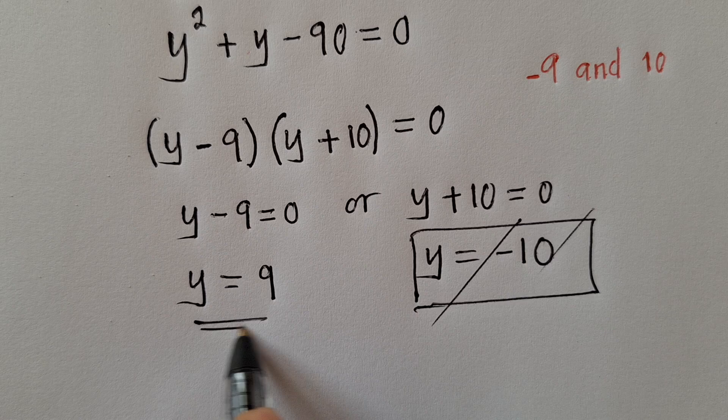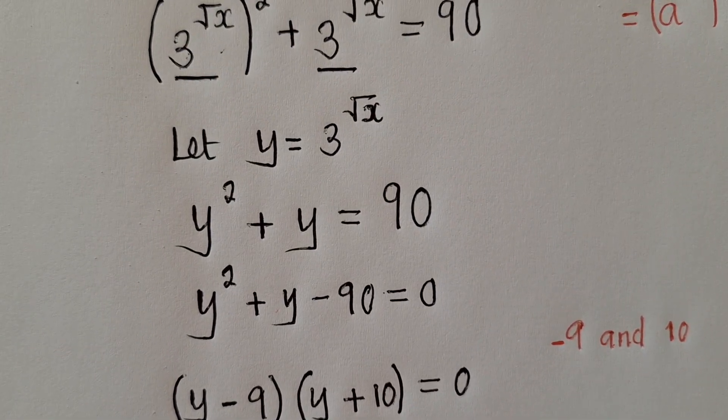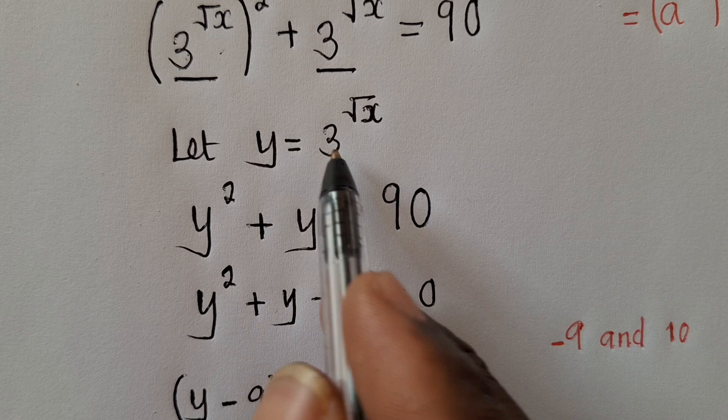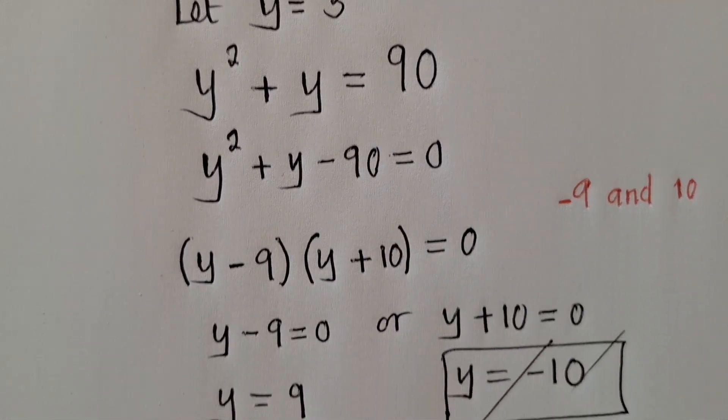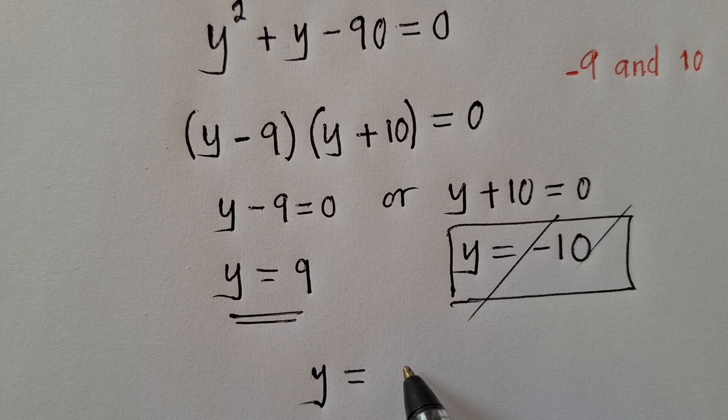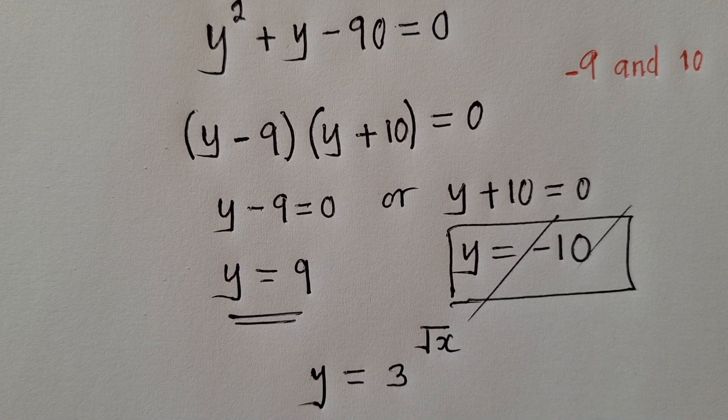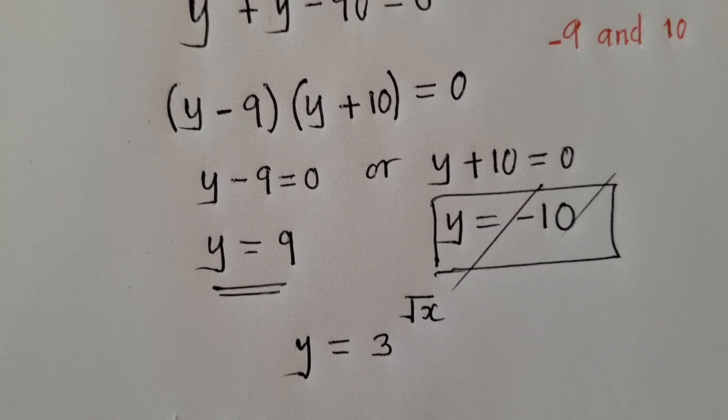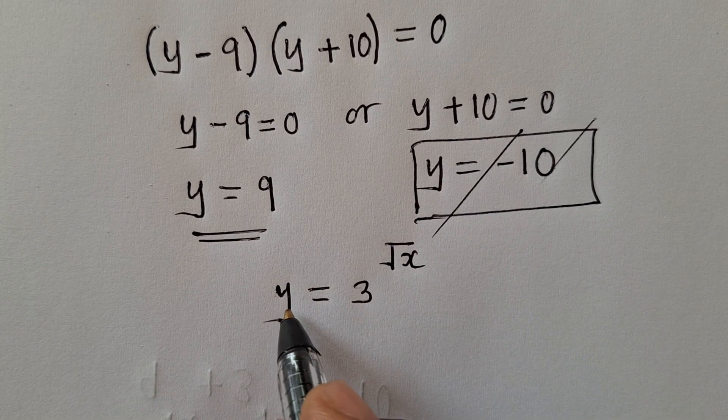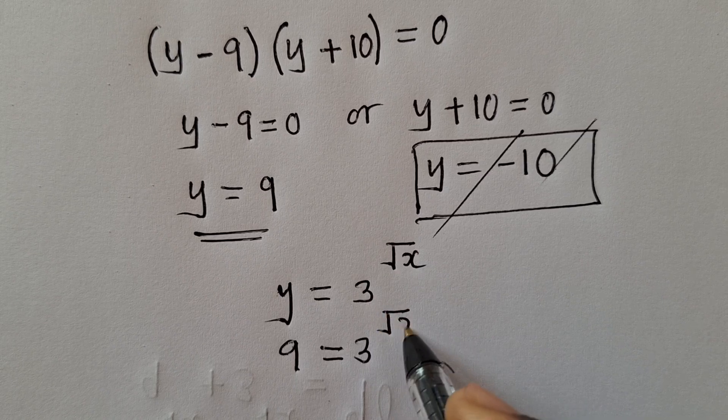And after getting this value of y, we go back to this point here, this stage where we said let y be equal to 3 square root of x. And when we get that, we can now write 9 here where y is.